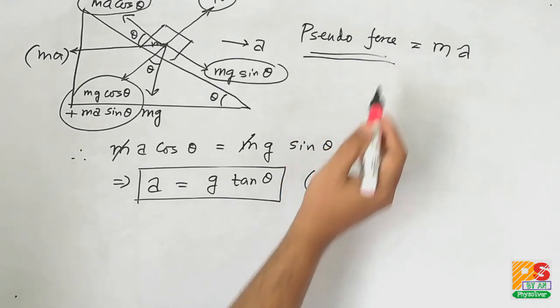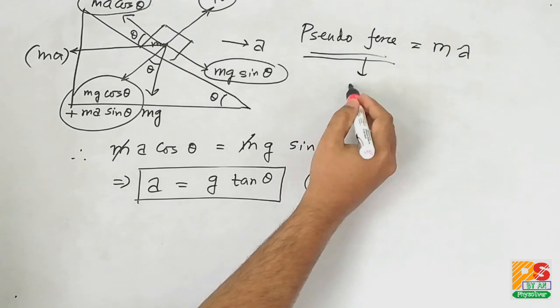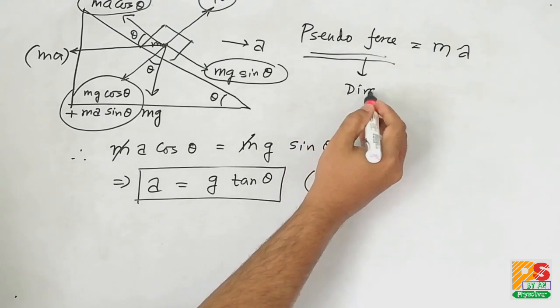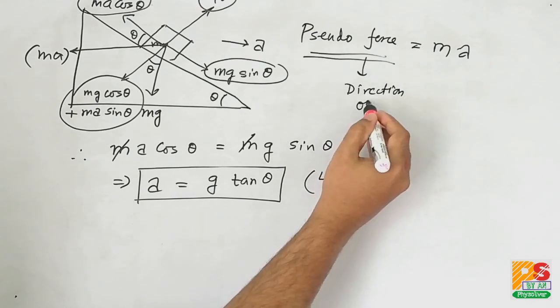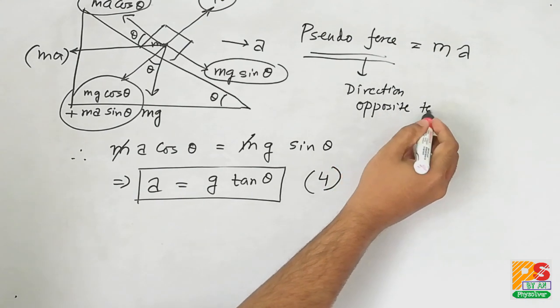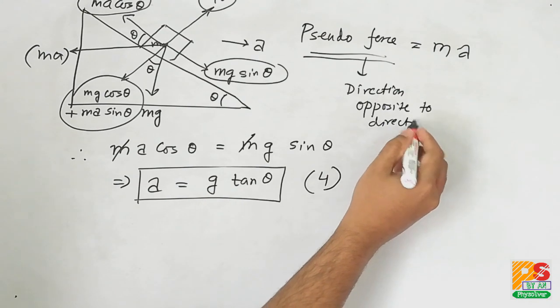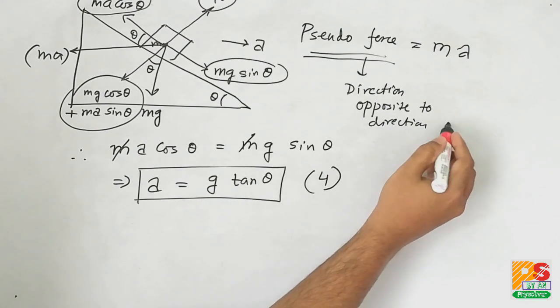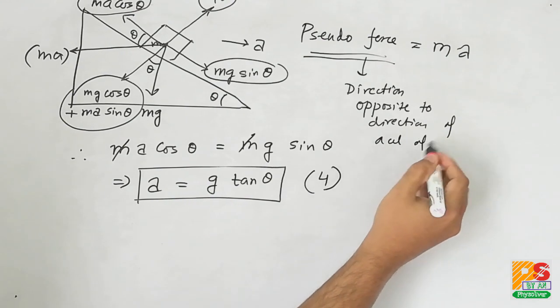Now remember, magnitude of pseudo force is MA, and direction of pseudo force is always opposite to the direction of acceleration of the frame.